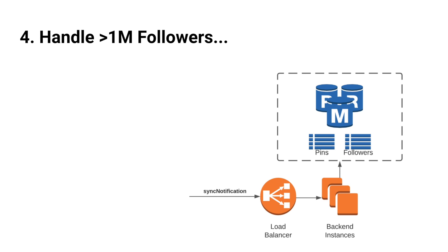Trying to send notifications to more than 1 million followers would just blow up the system. Therefore we should have special handling for users or pins with too many followers. We can adopt a hybrid approach similar to what Twitter uses: for updates with too many followers, instead of sending burst notifications, we make clients call an endpoint periodically — let's say every five minutes — to get updates on entities with too many followers. To prevent all devices calling this endpoint at the same time, we can randomize the period, for example a random number between zero to five minutes.